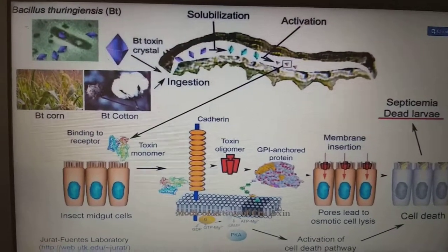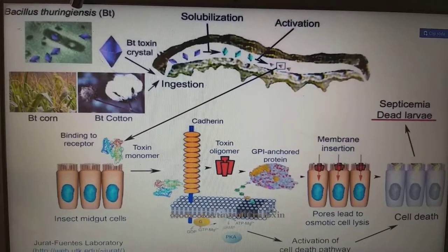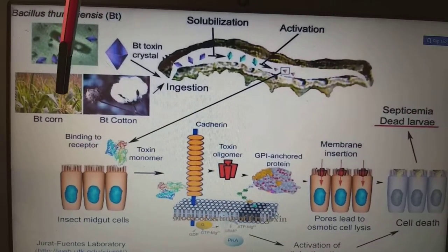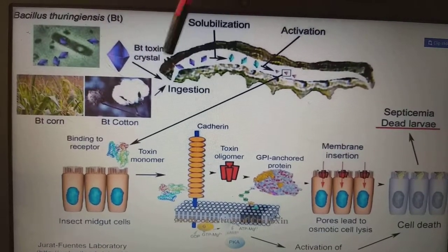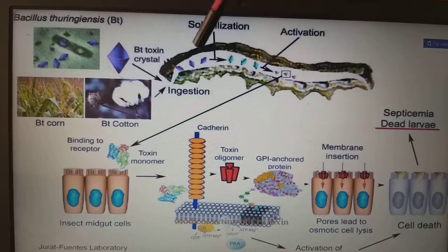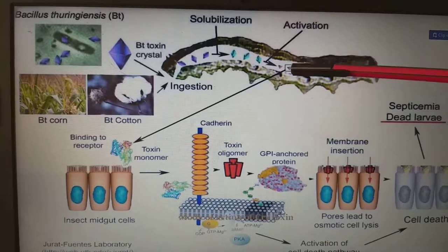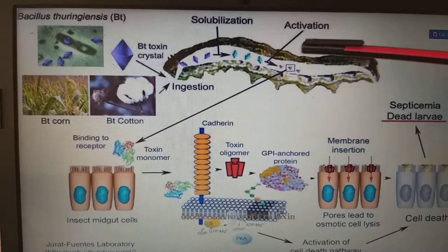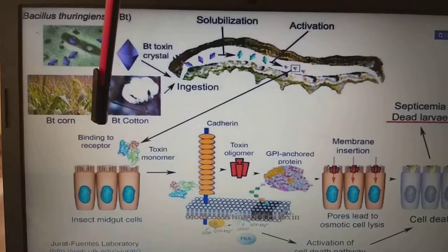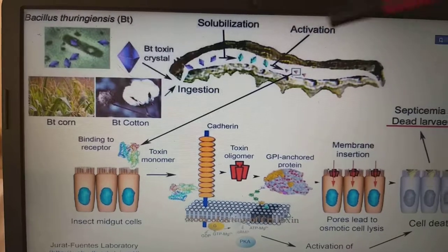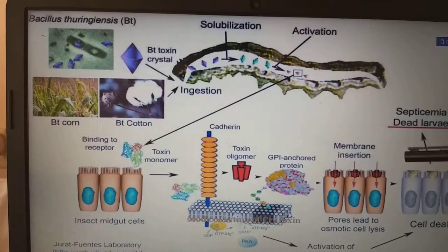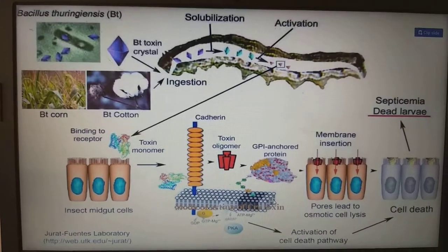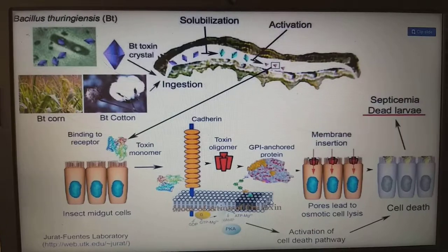In this diagram we can see Bacillus thuringiensis genetically engineered into corn as well as cotton — Bt corn and Bt cotton. Upon ingestion by the insect, the Bt toxin crystals are released, solubilized, and activated in the gut. The insect gut is alkaline in nature, which triggers activation. After activation, the toxin binds to receptors and forms a toxin monomer, followed by membrane insertion leading to pores in the membrane. Finally, this leads to septicemia and death of the insect larva.